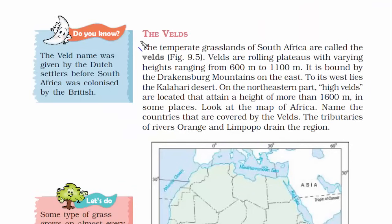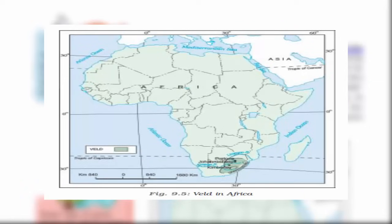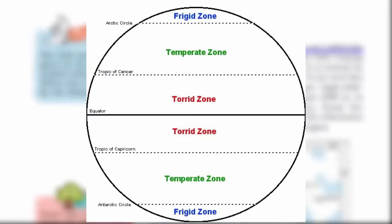Now we'll read about another type of grassland called the velds. This is a temperate grassland found in South Africa, just below the Tropic of Capricorn. Remember: anything below the Tropic of Capricorn is a temperate zone in the Southern Hemisphere, and in the Northern Hemisphere, anything above the Tropic of Cancer is a temperate zone.